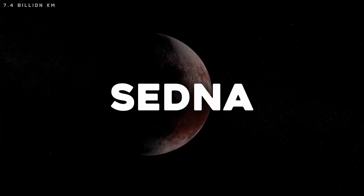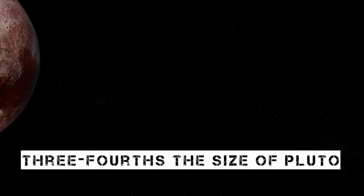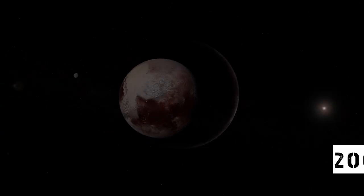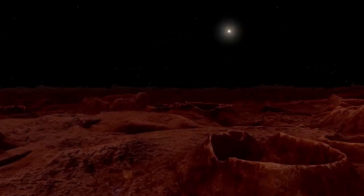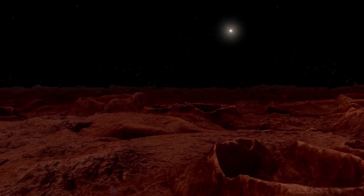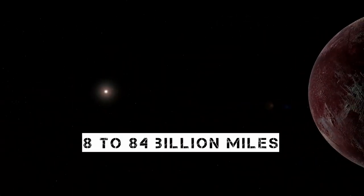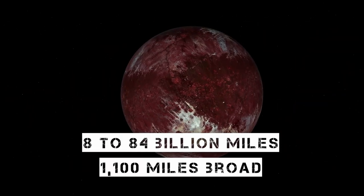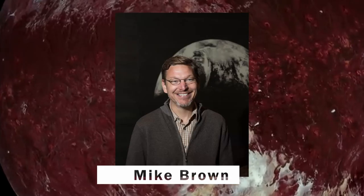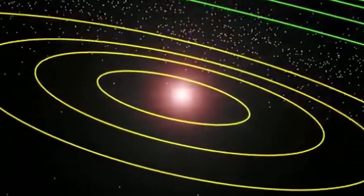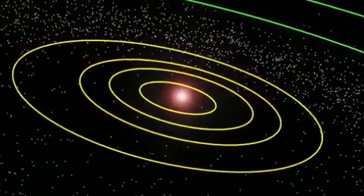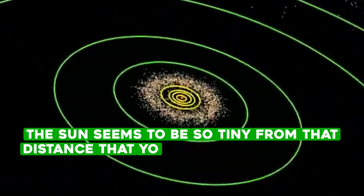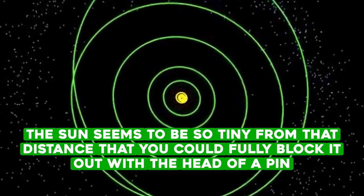A Kuiper Belt object named Sedna, measuring three-fourths the size of Pluto, was found in 2004. It is so far from the sun that one orbit takes around 10,500 years to complete. Sedna has an eccentric orbit around the sun that varies in size from 8 to 84 billion miles, and it is around 1,100 miles broad. Mike Brown, an astronomer at the California Institute of Technology who found this item as well as numerous other Kuiper Belt objects, stated that the sun seems to be so tiny from that distance that you could fully block it out with the head of a pin.